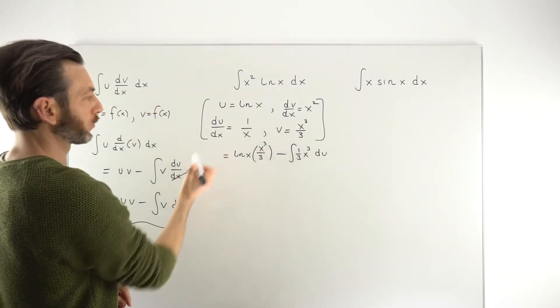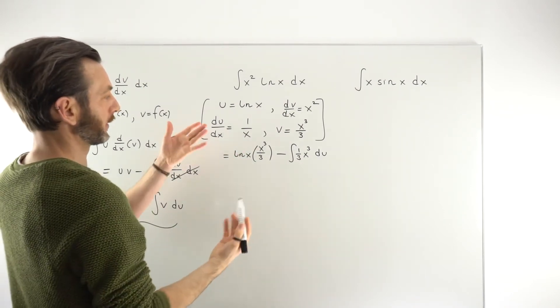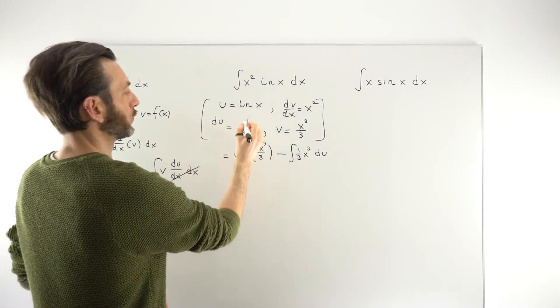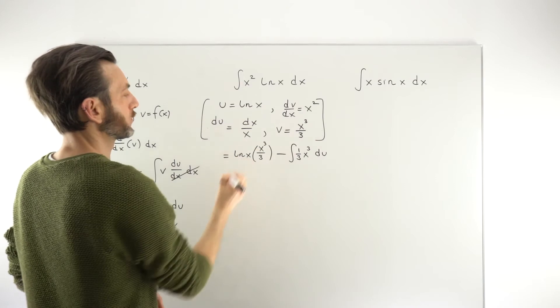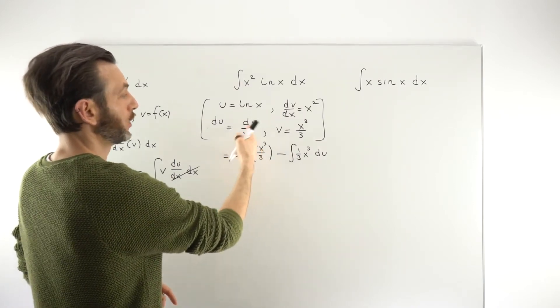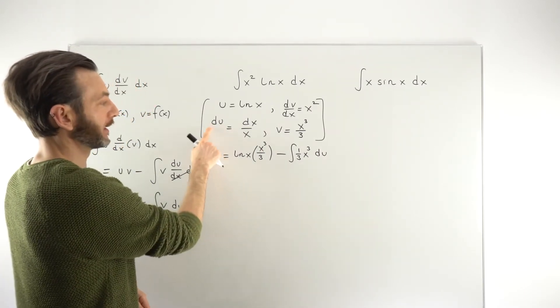So going back to this formula here, we can switch around the subject of this formula just by moving this dx over to the other side. So we would actually get dx over x, or you could even write that if you prefer as 1 over x dx. And basically either way, whichever way you're going to write that, this is giving us du.